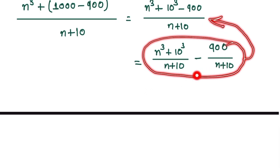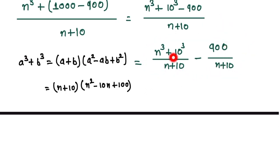Now we break n³ + 10³ using the formula a³ + b³. When we apply this formula it gives (n + 10)(n² - 10n + 100) divided by n + 10, minus 900 divided by n + 10. Here, n + 10 in the numerator and denominator cancel out.